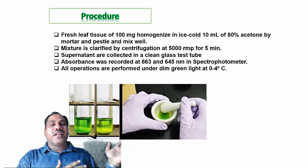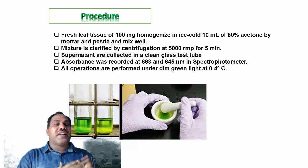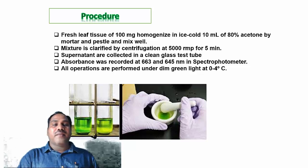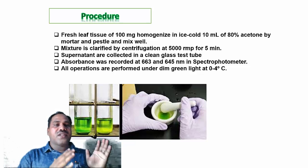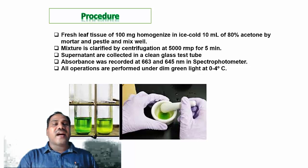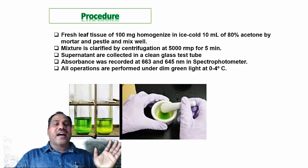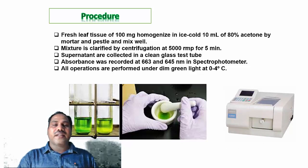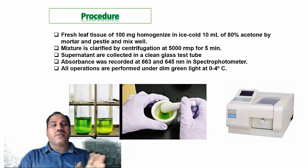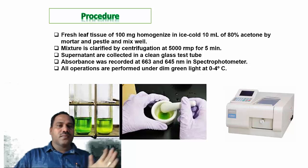The procedure: first, 100 milligrams of fresh leaf tissue is homogenized in 10 ml of ice-cold 80 percent acetone using a mortar and pestle, and mixed well. The mixture is then clarified by centrifugation at 5000 rpm for five minutes. The supernatant is collected in clean glass test tubes and absorbance is recorded at 663 nanometers and 645 nanometers using a spectrophotometer.